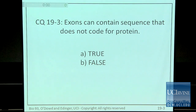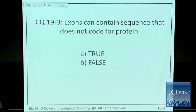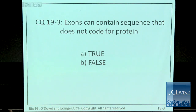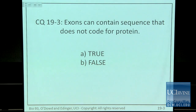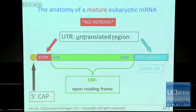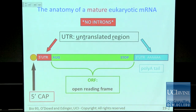Clicker question: exons can contain sequence that does not code for protein — true or false? The answer is true. This is a common misconception among beginning students. The UTRs — where did they come from? The introns were all spliced out, so the UTRs had to be part of an exon. Exons also contain RNA that doesn't get translated — the two untranslated regions at each end.